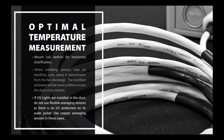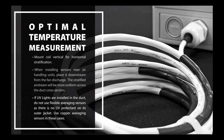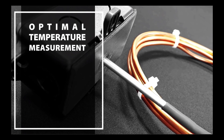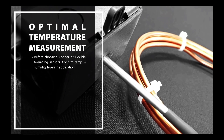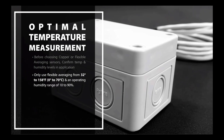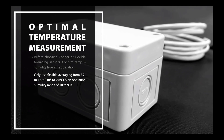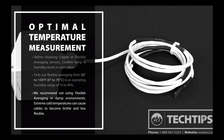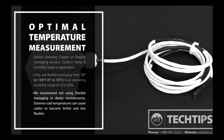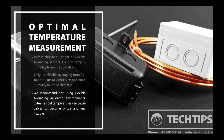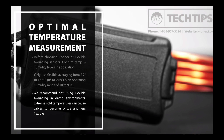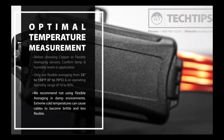If UV lights are installed in the duct, do not use flexible averaging sensors as there is no UV protectant on its outer jacket — use copper averaging sensors in these cases. Confirm operating temperatures and humidity levels in your application prior to choosing copper or flexible averaging sensors. Only use flexible averaging from 32 to 158 degrees Fahrenheit and an operating humidity range of 10 to 90 percent. We recommend not using flexible averaging in damp environments, as extreme cold temperatures can cause cables to become brittle, leading to difficult installations and even damage to cable jackets and insulation. Copper averaging sensors should be used in these instances.